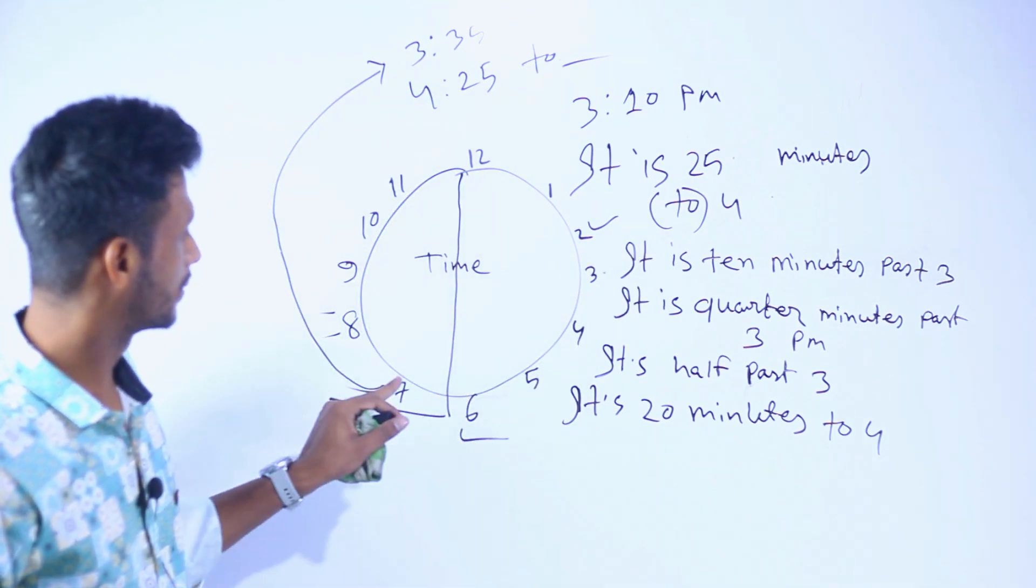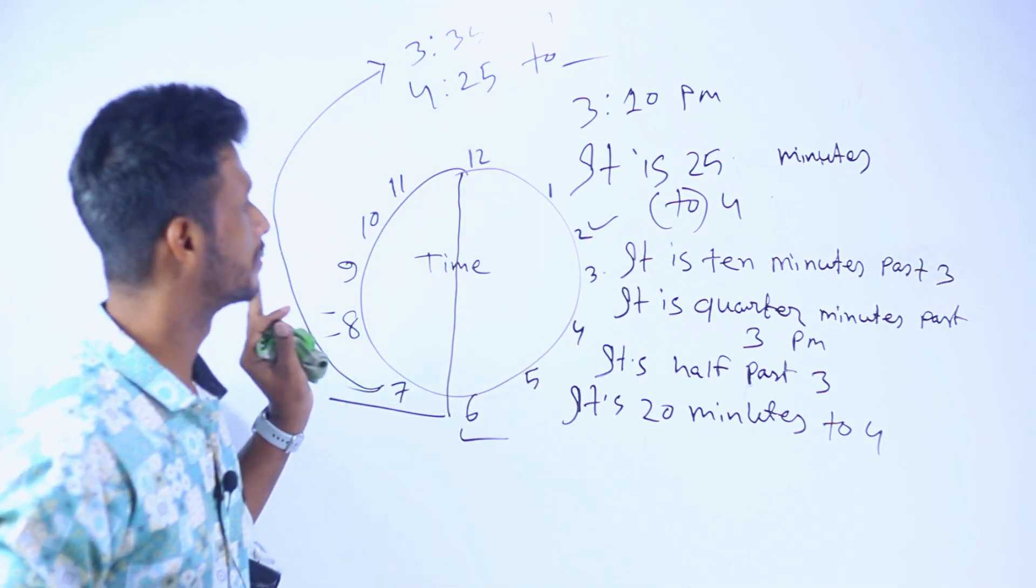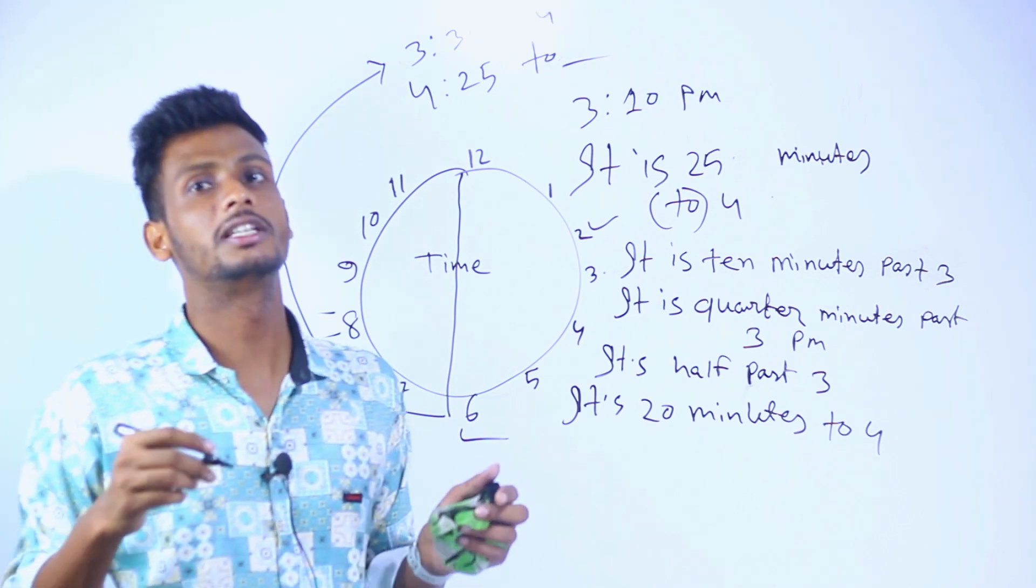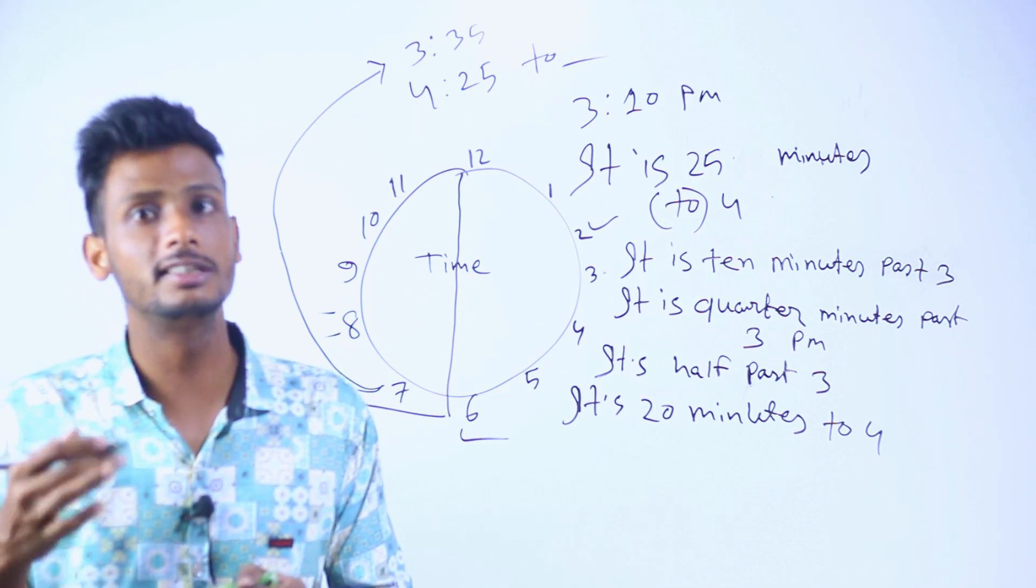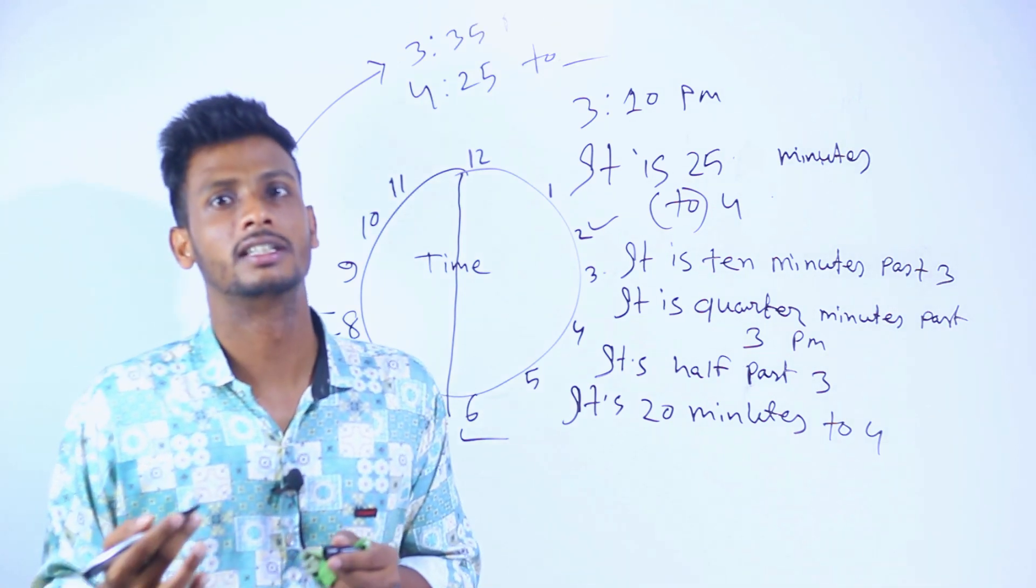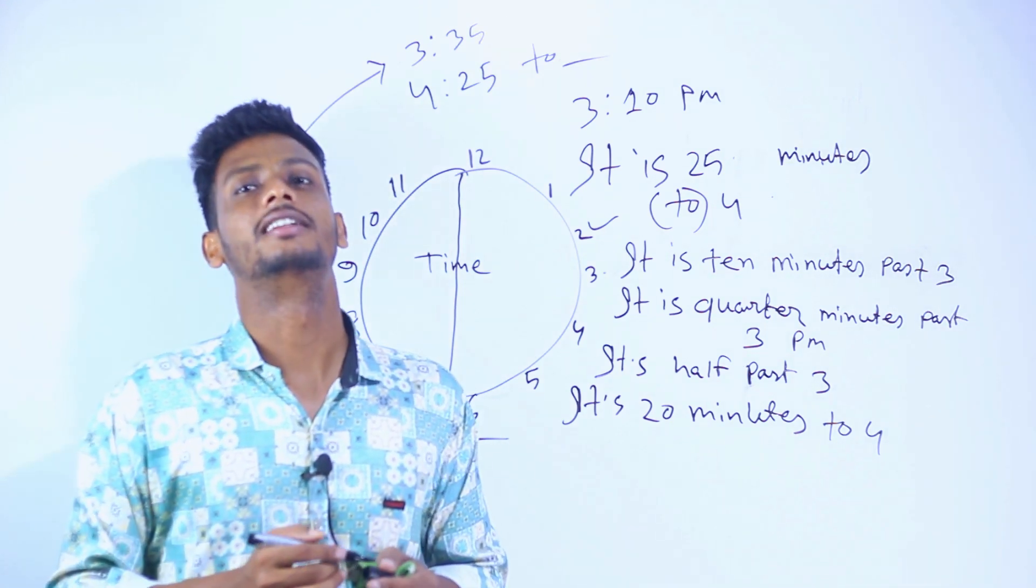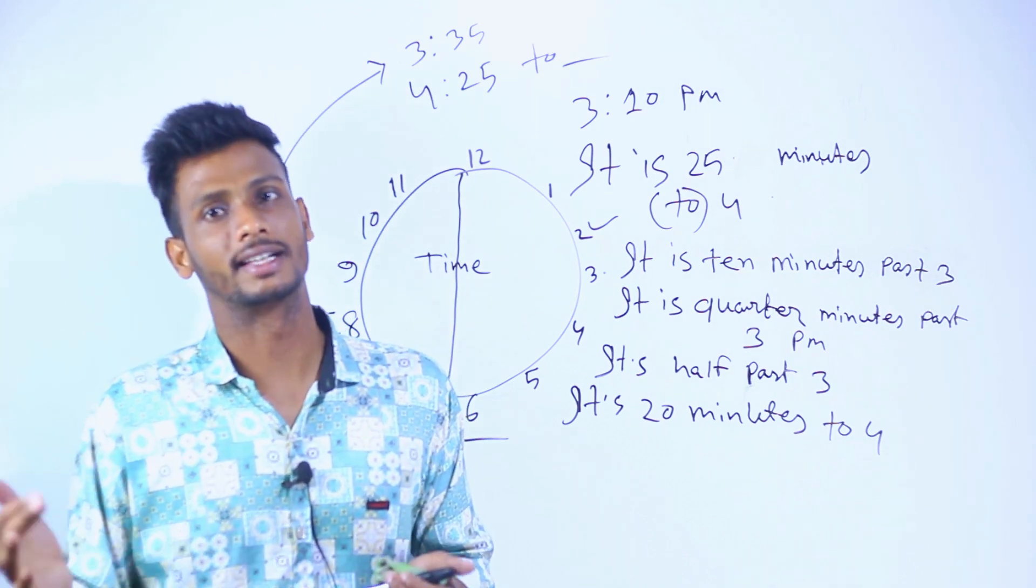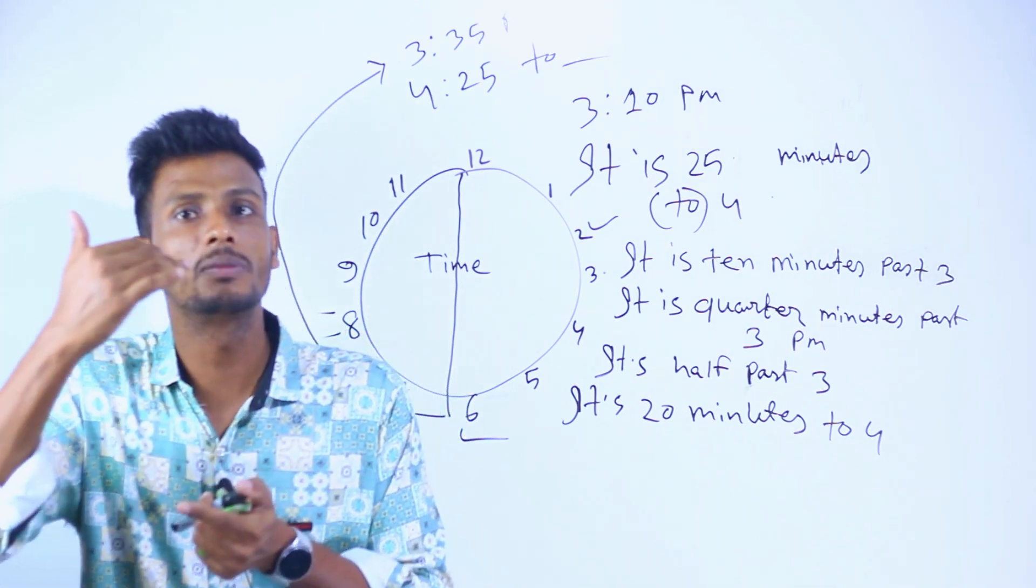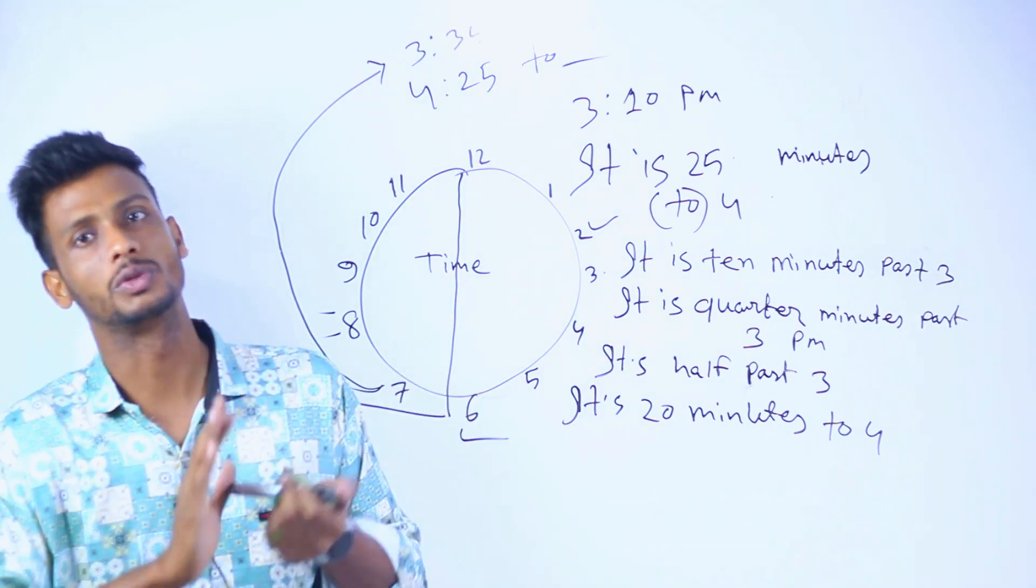It is 25 minutes to 4. When it is past the half hour, we use 'to' instead of 'past.'